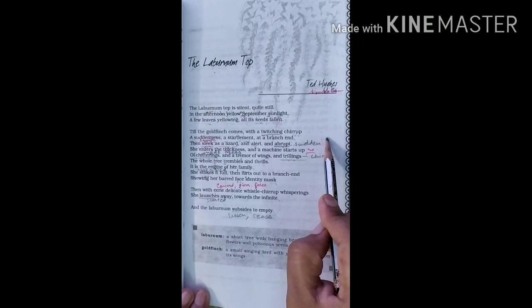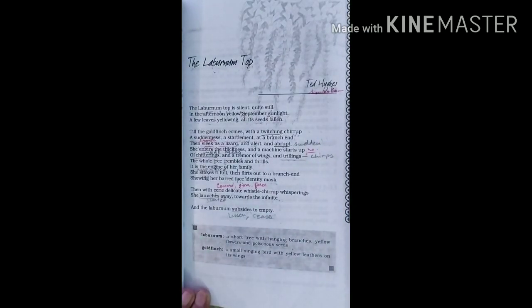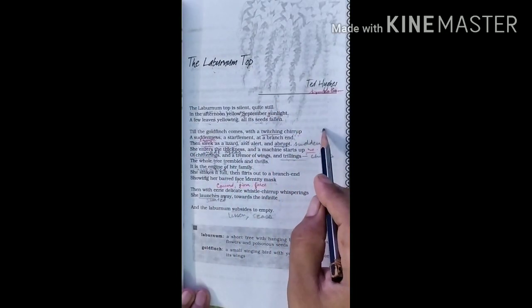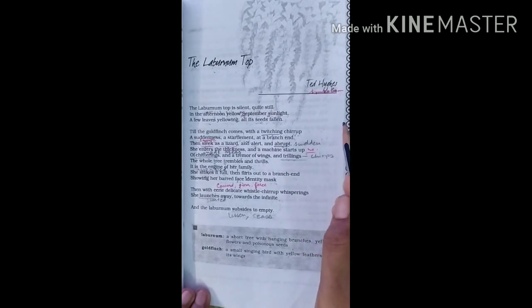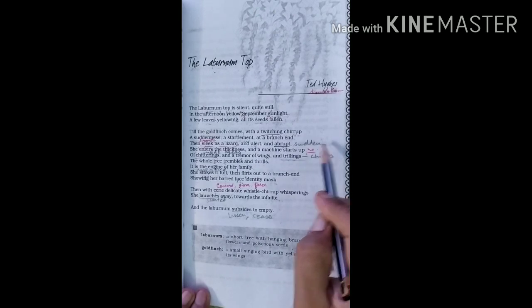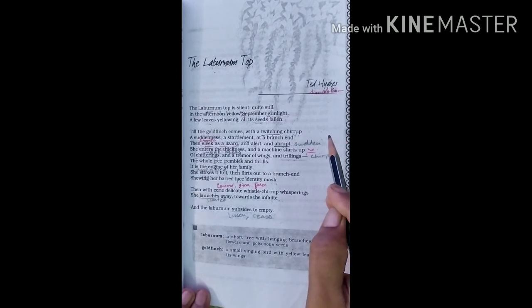It then goes into the thick bark of the Laburnum. Laburnum here refers for the tree. Smoothly but abruptly, abruptly means suddenly, with alertness. As soon as she enters the tree, a machine starts up of chitterings and tremor of wings and trillings. Her nest is inside the Laburnum tree. The image of machine here refers to the young ones of the bird. A machine makes a lot of noise when it starts.